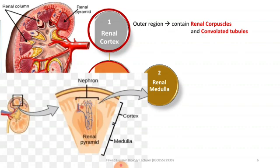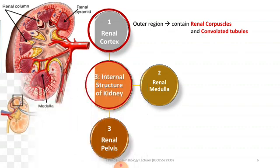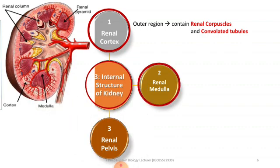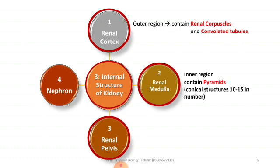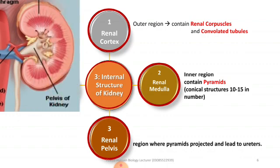One part is the renal cortex and the other part is the renal medulla, which contains renal pyramids. The renal medulla is the inner region that contains pyramids — cone-shaped structures, 10 to 15 in number — where filtration and collection of waste material occurs. The third region is the renal pelvis, where the pyramids project and lead to the ureter, where base products accumulate and then enter the ureter.